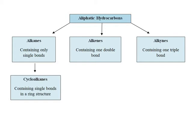Alkynes are hydrocarbons that contain a triple bond, and their general formula is CₙH₂ₙ₋₂. Acetylene is the simplest form of alkyne. We also have cycloalkanes, sometimes called naphthenes, which are saturated hydrocarbons containing one or more rings. The general formula for cycloalkanes containing one ring is CₙH₂ₙ.